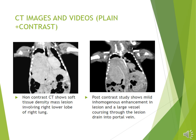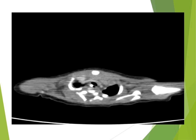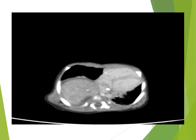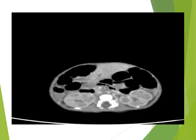Non-contrast CT shows soft tissue density mass lesion involving the right lower lobe of the right lung. On post-contrast CT study, there is mild inhomogeneous enhancement in the lesion and a large vessel is seen coursing through the lesion, draining into the portal vein. A dilated hemiazygous vein is also seen.